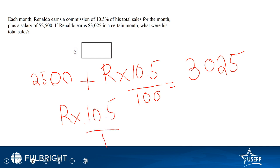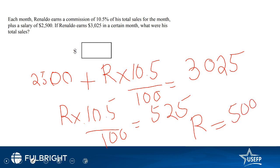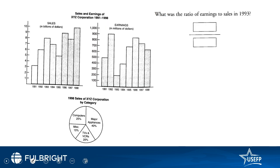If we simplify, this comes out to be $5,000. So we type 5000 in the answer box.